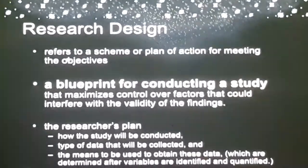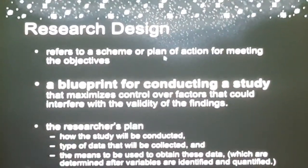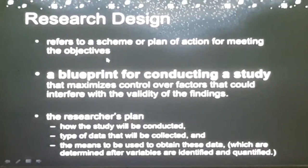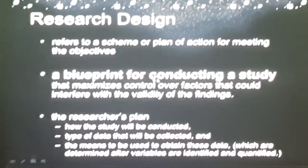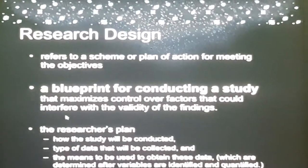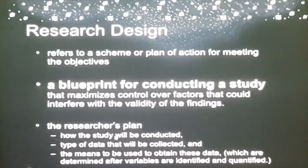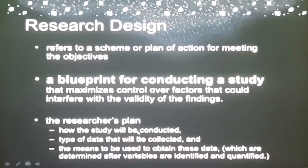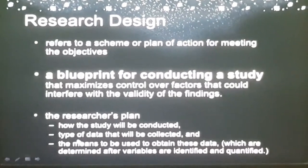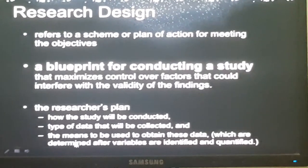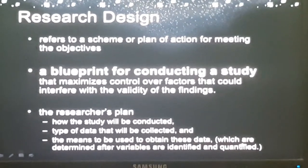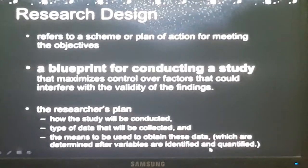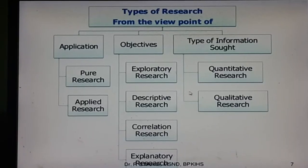The fourth step of the research process is preparing the research design. Research design refers to a scheme or plan of action for meeting the objectives. It is a blueprint for conducting a study that maximizes control over factors that could interfere with the validity of the findings. The researchers plan how the study will be conducted, the type of data that will be collected, and the means to be used to obtain these data, which are determined after variables are identified in the research design.